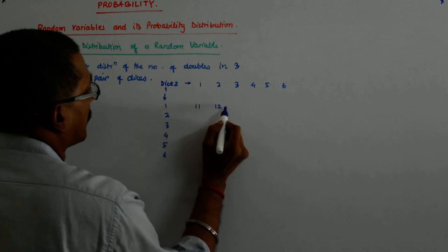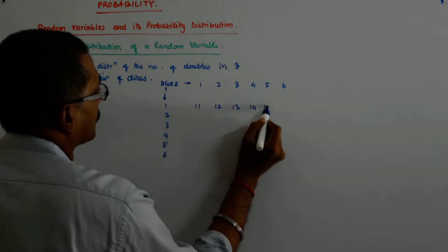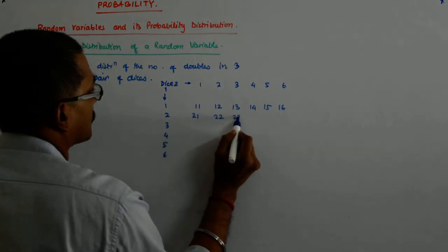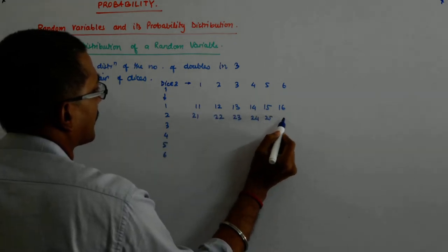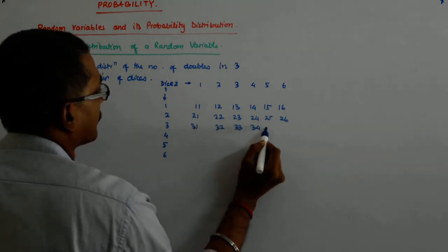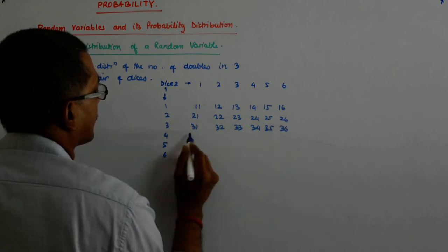So this is one-one, one-two, one-three, one-four, one-five, one-six. Two-one, two-two, two-three, two-four, two-five, two-six. Three-one, three-two, three-three, three-four, three-five, three-six.